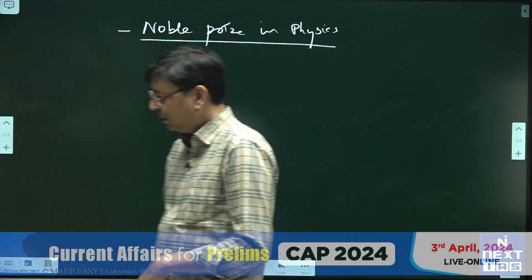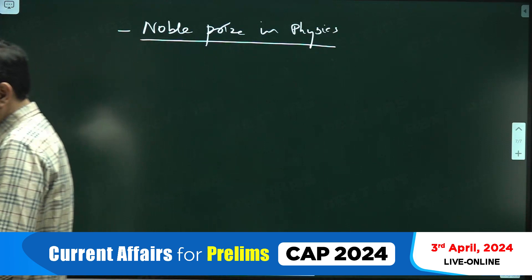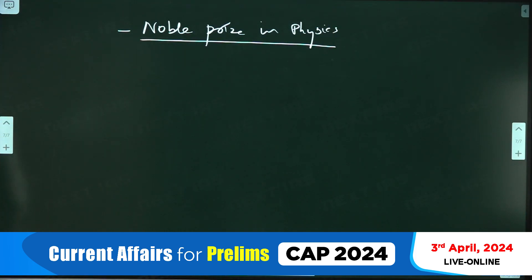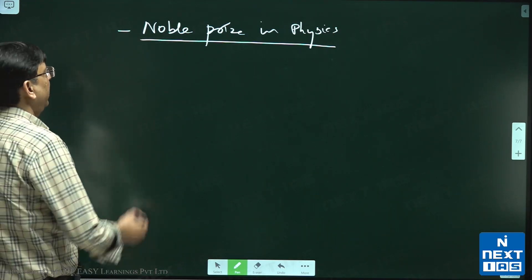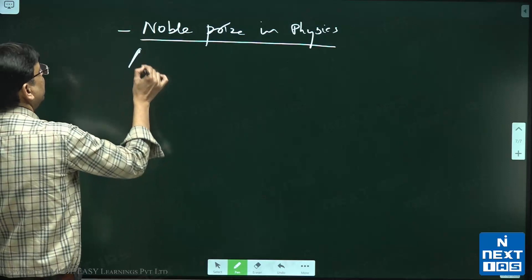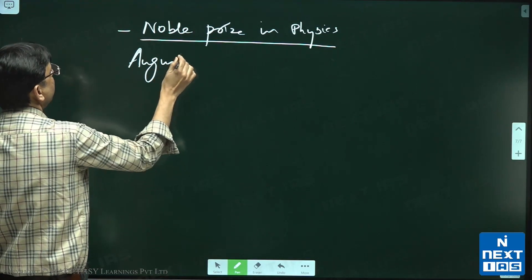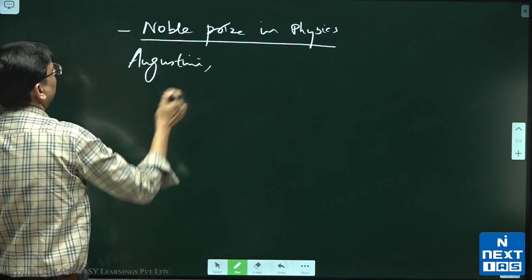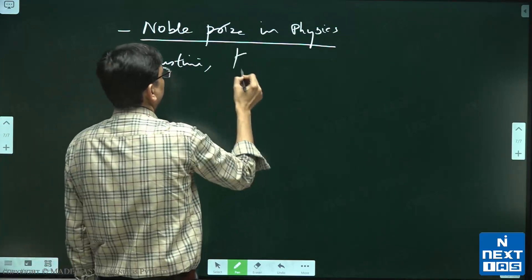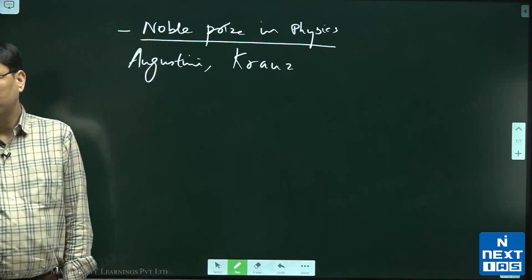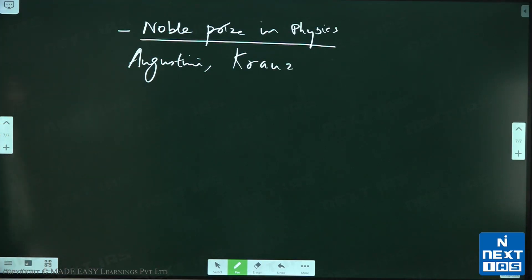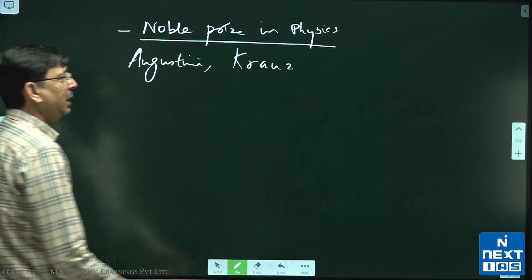The Nobel Prize in Physics was given to Agostini, L'Huillier, and Krauss.